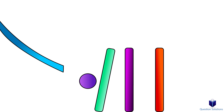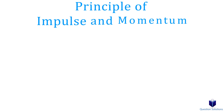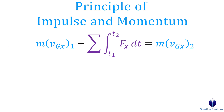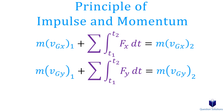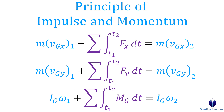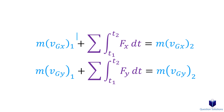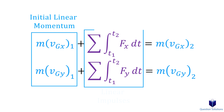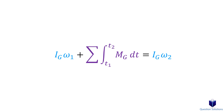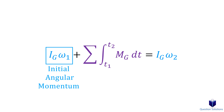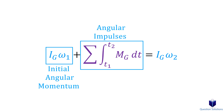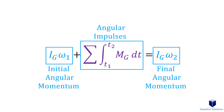Now that we know what impulse and momentum are, we can write our principle of impulse and momentum equations. There are three such equations: the first is for x-axis forces, the second is for y-axis forces, and the last is the angular impulse and momentum equation. The first two state that initial linear momentum plus linear impulses equals final linear momentum. The third states that initial angular momentum plus the sum of all angular impulses equals final angular momentum.